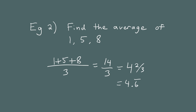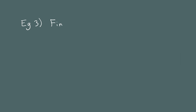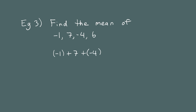Let's see one more. This time we'll compute the mean of four numbers: negative 1, 7, negative 4, and 6. So we just add them all together — negative 1 plus 7 plus negative 4 plus 6 — and since there's four numbers, we divide by 4. That gives us 8 fourths, which is 2. So the mean of these four numbers is 2.